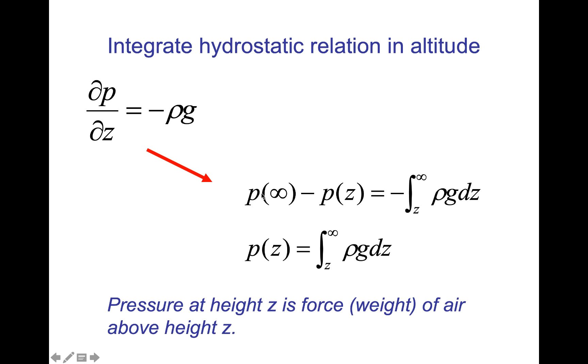And at the top of the atmosphere, we're going to take the pressure to be zero. If we do that integration, then we have pressure at infinity minus the pressure at some height is equal to the integral from z to infinity of rho g dz. Because this is zero, then the pressure at some height is going to be equal to the integral of z to infinity, so all of the air above it, and that's the integral of rho g dz. This is force. This is the weight of air.